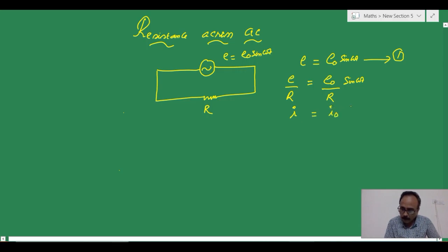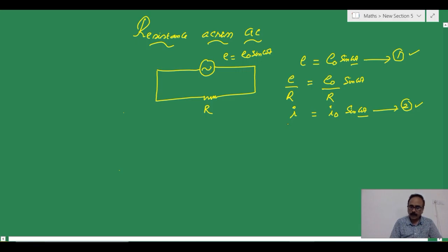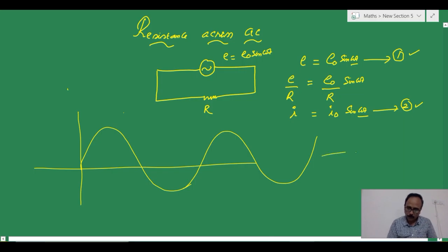Because we know Ohm's law is equally valid for the alternating current circuits also. Now, E by R can be written as I equals E not by R as I not sin omega t. As E equals E not sin omega t and I equals I not sin omega t, we can say from these two equations that these two are existing in the same phase, or we can say that there is no phase difference.